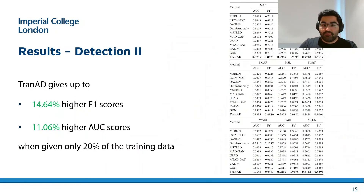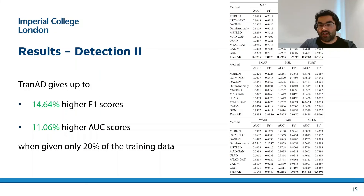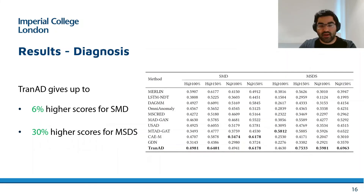In a limited data budget — that is, when only 20% of the training data is used — TRANAD gives up to 14% higher F1 scores and 11% higher AUC scores.